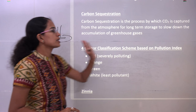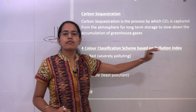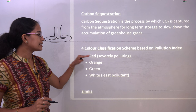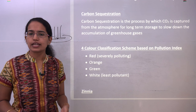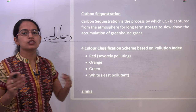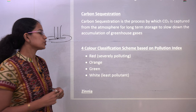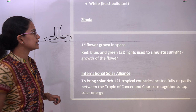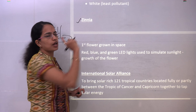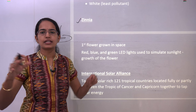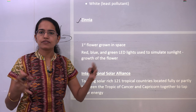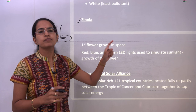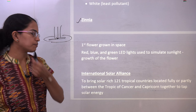The next topic is the pollution index. In India, we have a four-color scheme for determining the pollution index: red, orange, green, and white. Sometimes there could be a direct question on which color is not part of the pollution index. Red means severely polluting and white means least polluting. The next topic is Zinnia — the first flower to be planted in space — grown using artificial LED light from red, blue, and green LED sources to simulate natural sunlight.